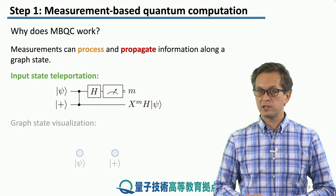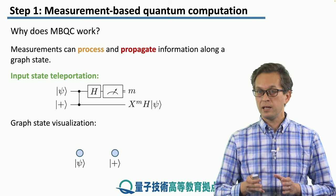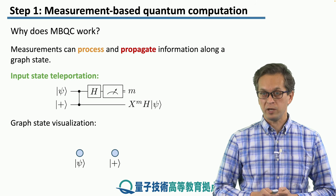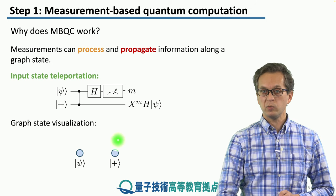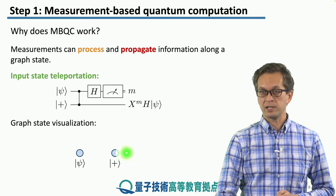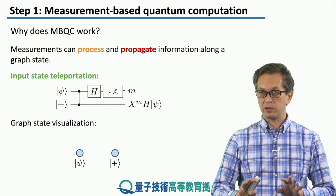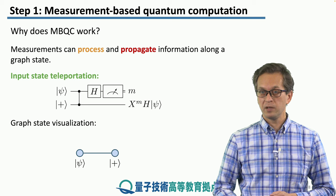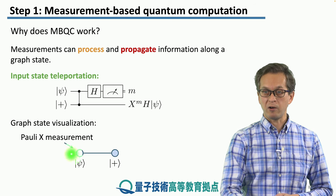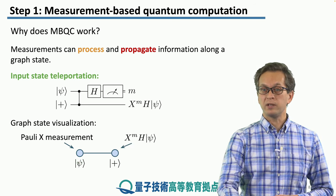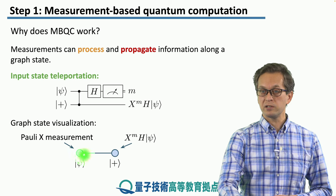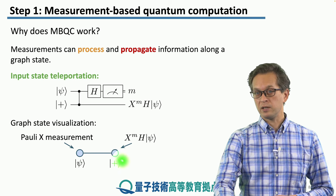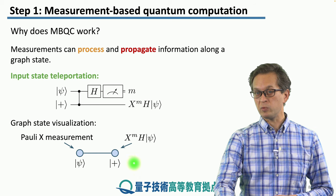We can view this scenario in the graph state picture. We begin with two qubits, psi and plus, which are separable. We apply the C phase gate. We entangle them. Then we measure the first qubit in the Pauli X basis. And by doing that, we teleport the initial state of the first qubit onto the state of the second qubit.